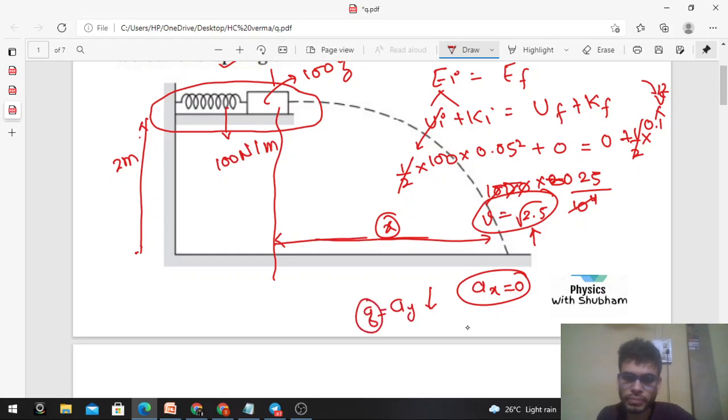Now let's find the time of flight from the y direction. In the y direction we know the displacement: s equals ut plus half at squared. Displacement in the y direction is 2, initial speed in the y direction is 0, so ut becomes zero. Half of acceleration will be g into t squared.